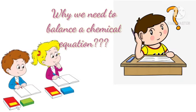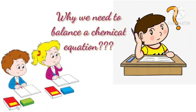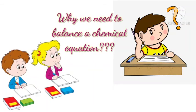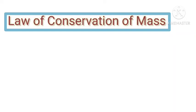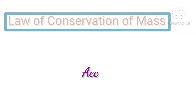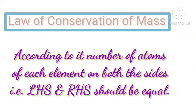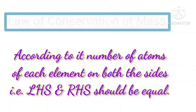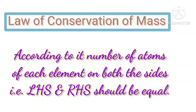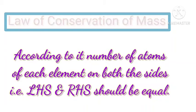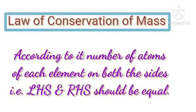Children, do you know what is the need of balancing a chemical equation? Well, in chemistry we obey the law of conservation of mass, according to which the number of atoms of each element on the left hand side which are reactants should be equal to the number of atoms of elements on the right hand side that is products. So this is the reason why we need to balance our chemical equation.